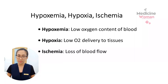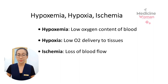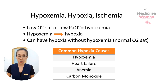Let me review some important terms. You need to understand the difference between hypoxemia, hypoxia, and ischemia. Hypoxemia means a low oxygen content of blood. Hypoxia means a low oxygen delivery to tissue, and hypoxia can be caused by hypoxemia but there are other causes as well. Ischemia is a special type of decreasing oxygen delivery to tissue, and that's caused by a loss of blood flow. When the blood in the body has a low oxygen saturation — a low saturation of hemoglobin or a low PaO2 — that is the definition of hypoxemia.